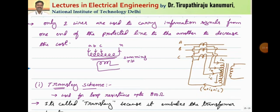Under balanced conditions, the phasor sum of the three currents is equal to zero, so no current passes through this winding. Whenever there is an imbalance in the currents — that means if the sum of the currents is not equal to zero or some fault happens — only then will the net effect be transmitted to the secondary of the transformer. This transformer is called the summing transformer. Using this summing transformer, only two wires are sufficient.